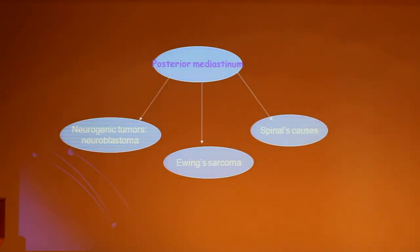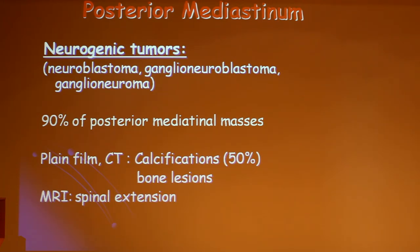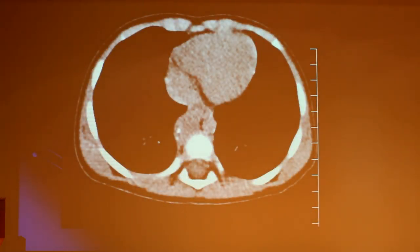For the posterior mediastinum, the most common masses are neurogenic tumors, like neuroblastoma. Other lesions are masses with sarcoma and related tumors. The neurogenic tumors include ganglioneuroma, neuroblastoma, composite neuroblastoma, and neurofibroma. You can see calcification and intraspinal extension. To assess the extension, you can use MRI. This is an example of the calcification pattern.